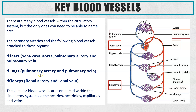For the lungs, there are the pulmonary artery and the pulmonary vein — any blood vessels connected to the lungs will have 'pulmonary' in front of them. For the kidneys, blood vessels will have 'renal' in front of them: the blood vessel entering the kidneys is the renal artery, and the blood vessel exiting is the renal vein, which then delivers blood back into the heart.